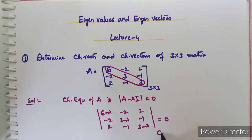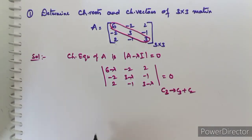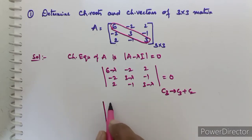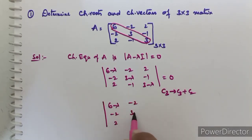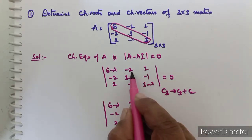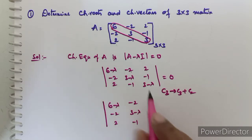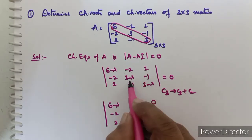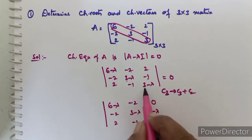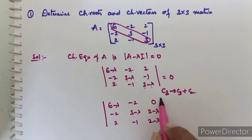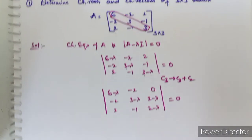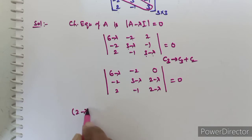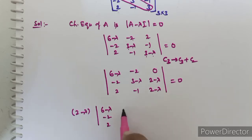To find the determinant easily, we apply the column transformation C3 → C3 + C2. The first column remains 6-λ, -2, 2; the second column -2, 3-λ, -1; and after C3+C2 the third column becomes 0, 2-λ, 2-λ. Now we can take (2-λ) as common from the third column.